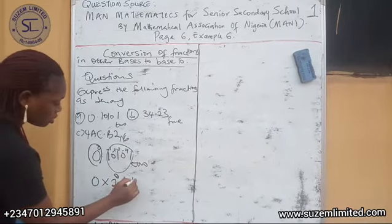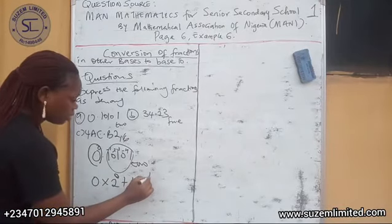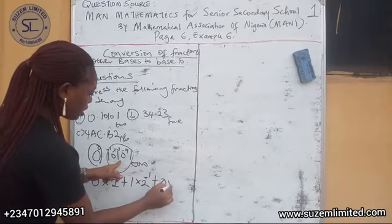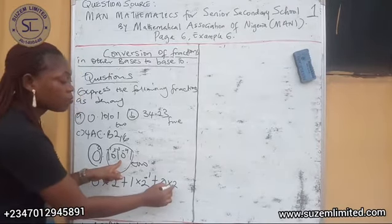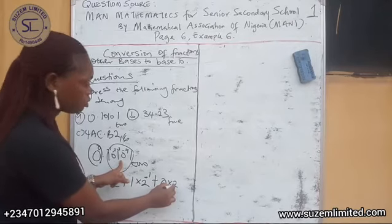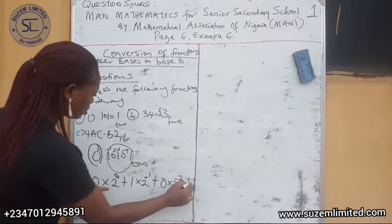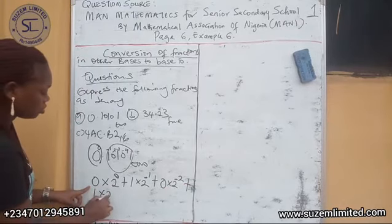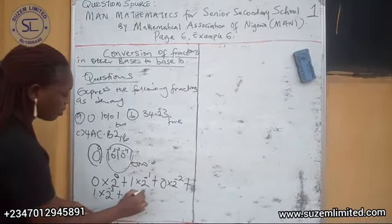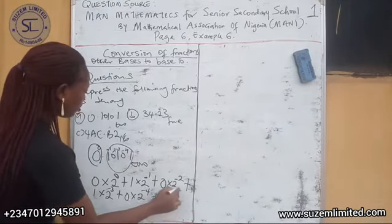Plus 1 times 2 raised to the power minus 1, plus 0 times 2 raised to the power minus 2, plus 1 times 2 raised to the power minus 3, plus 0 times 2 raised to the power minus 4, plus 1 times 2 raised to the power minus 5. We are multiplying by 2 because the number is in base 2 — that's why we are multiplying by 2.